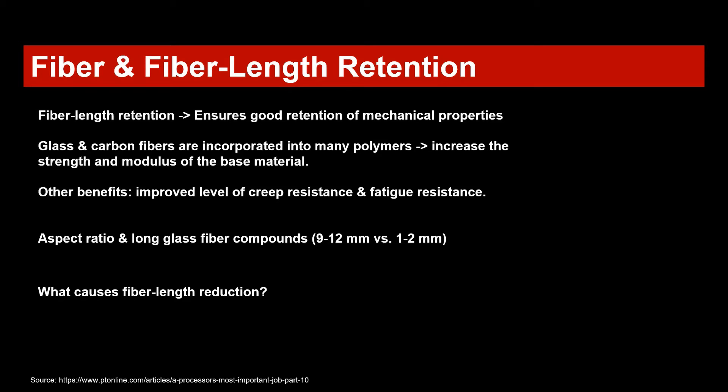The important question is what causes fiber length reduction and what we can do to prevent this. When you take long glass fiber products and process them in injection molding, one topic is screw rotation — it's always a combination of revolutions per minute, recovery time, and back pressure.